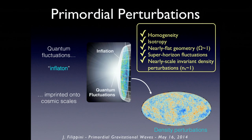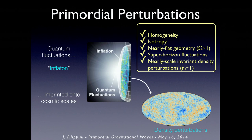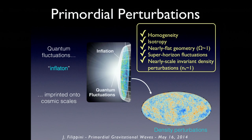Inflation will be talked about by later speakers. The general picture is that it not only explains the boring physics of the very large universe — homogeneous, isotropic, spatially flat — but it also has the remarkable property of making the universe interesting by imprinting quantum fluctuations on cosmological scales. Quantum fluctuations in whatever field drives inflation, called the inflaton, get blown up by cosmic expansion and become imprinted on very large scales — essentially quantum white noise imprinted onto the universe, producing a nearly scale-invariant spectrum of density perturbations.